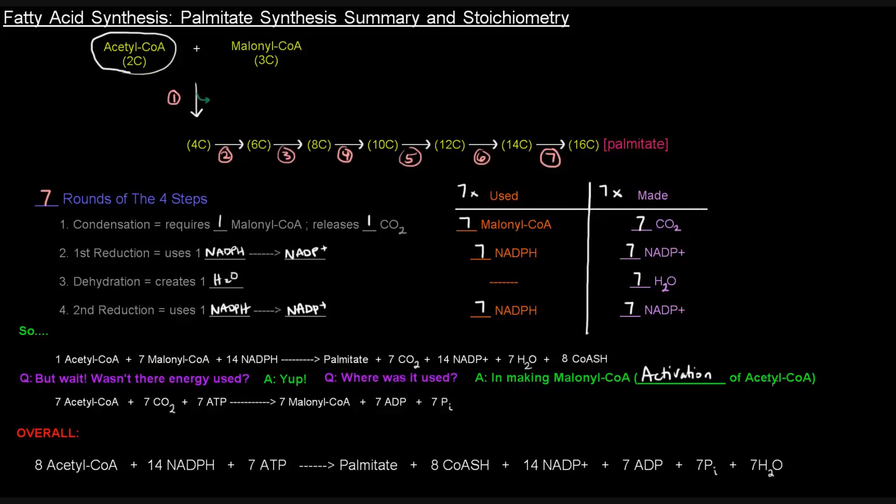Each malonyl-CoA that we made came from an acetyl-CoA, and that required one ATP each time. And so since we had seven malonyl-CoAs, those must have come from seven acetyl-CoAs. So that was seven acetyl-CoAs, and there was a carboxylation reaction, acetyl-CoA carboxylase, and that required seven ATPs to make seven malonyl-CoAs, and then the ADPs and the phosphates.